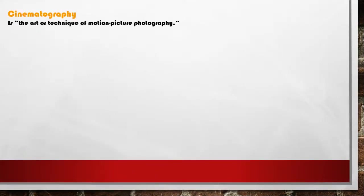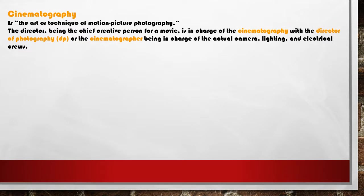In terms of what cinematography is, if you're unfamiliar with it, the classic film dictionary definition is the art or technique of motion picture photography. Obviously the director, being the chief creative person for a movie, is in charge of the cinematography, along with what we call either the cinematographer, director of photography, or DP.